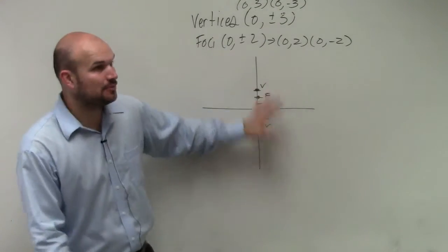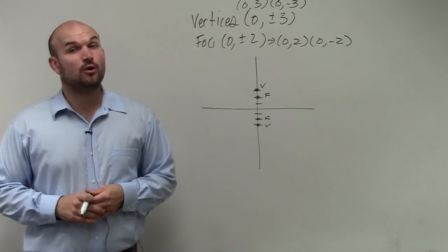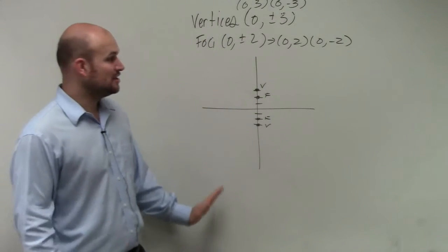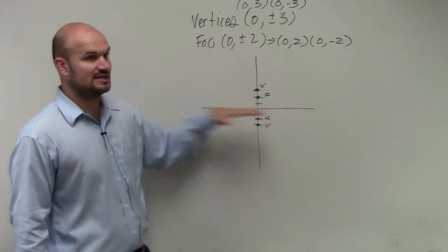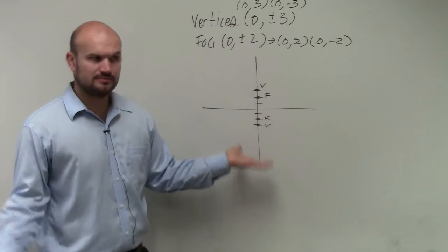So we plotted the information, step one. Step two, determine if it's a horizontal or vertical major axis. So does it look like my major axis is going vertical or horizontal? Vertical. Vertical, right? Not too bad.